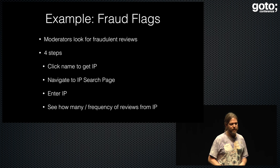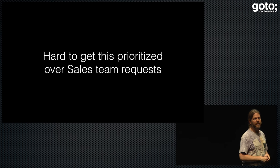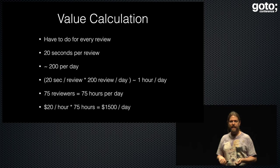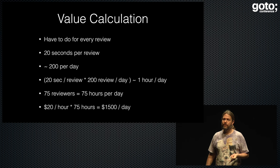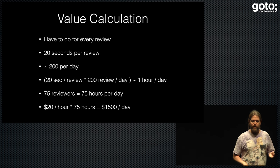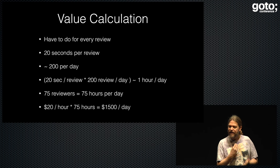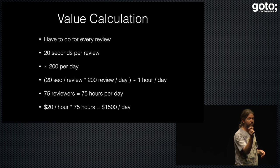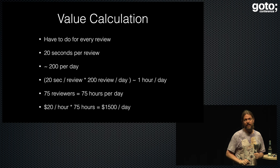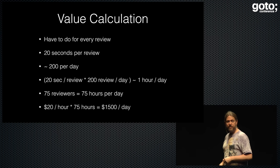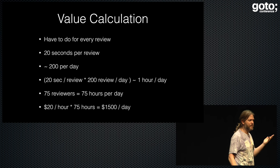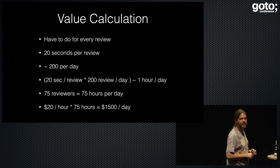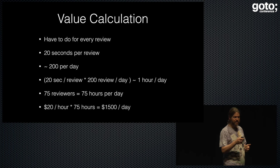Not a huge thing, but it was a pain. The moderation team brought this card all the time and it never got sequenced — sales would come in with their big project and override it. So I sat down with them and said let's look at this: it takes 20 seconds to do this per review, we do about 200 reviews per day for a reviewer, that adds up to about an hour a day. We have 75 reviewers. That's $1,500 a day we could immediately begin saving if we had a small change that took this 20-second process down to a second — we ended up adding a little red flag if there was more than one review for that IP address.